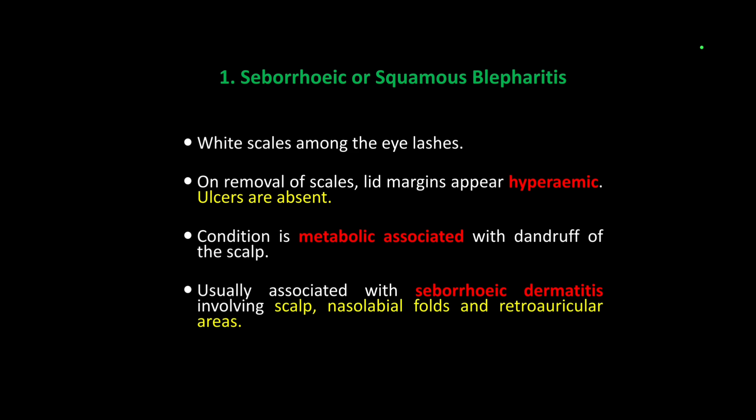Now let's go to anterior blepharitis. In anterior blepharitis, first we will discuss seborrheic squamous blepharitis. What will we get? There will be white scales, just like dandruff. It will also be presented in the form of seborrhea. One important thing is that ulceration will be absent. These conditions are also associated with metabolic conditions, just like dandruff of the scalp.